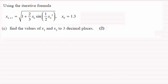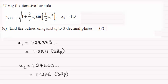There is a quick way of doing it which I'll show you in a moment. But those answers, if you work them out to three decimal places, are x₁ = 1.284 and x₂ = 1.276.